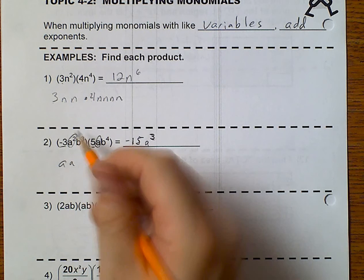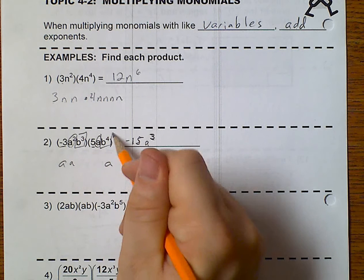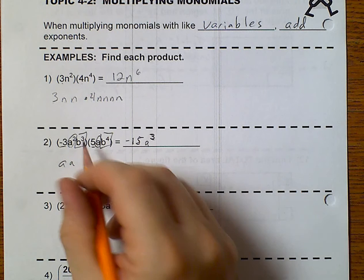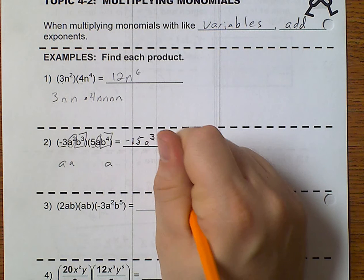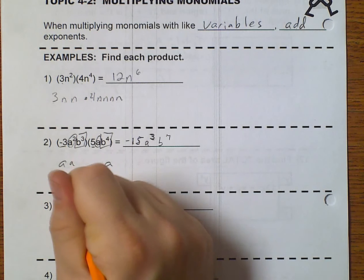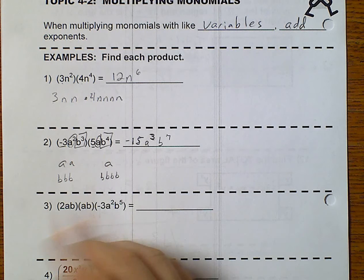And now, this is b to the 3rd and b to the 4th. Well, 3 plus 4 is 7. This is really b, b, b, and b, b, b, b, which makes 7.